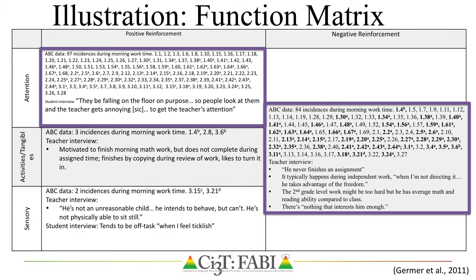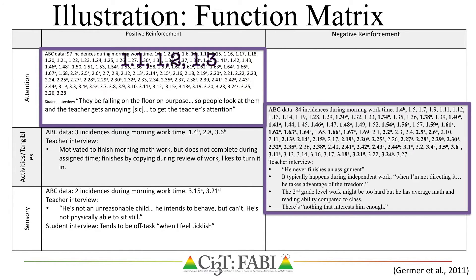When collecting ABC data, each instance of the behavior during the observation is coded by 1.1, 1.2, 1.3, etc. 1.1 indicates the first observation and the first instance in which the behavior occurred. 1.2 indicates the first observation day and the second instance, and 1.3 indicates the first observation day and the third instance, and so forth.